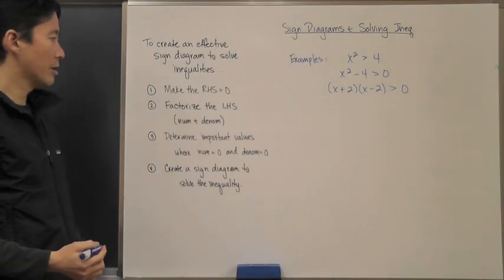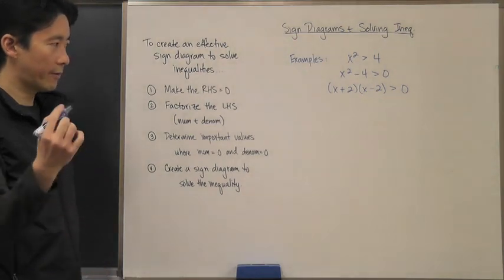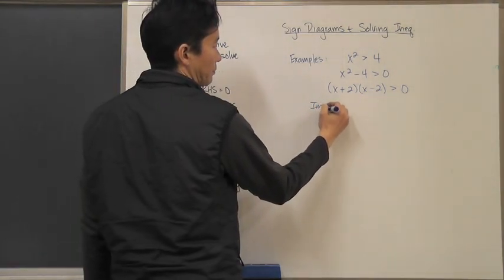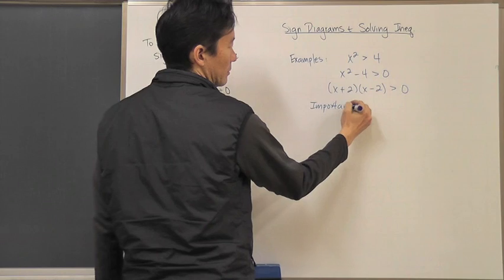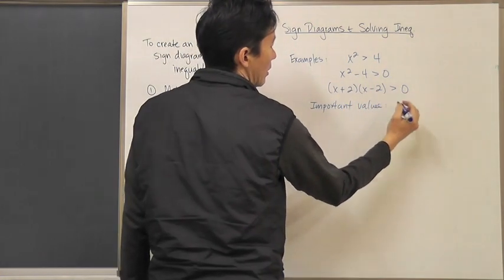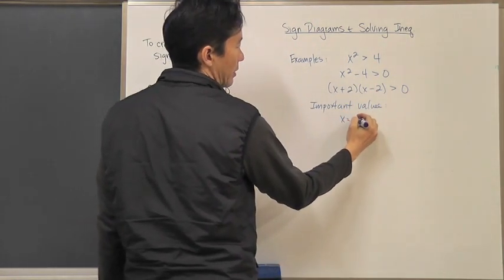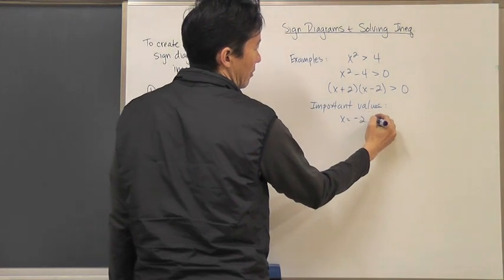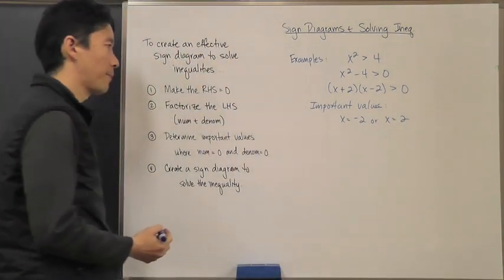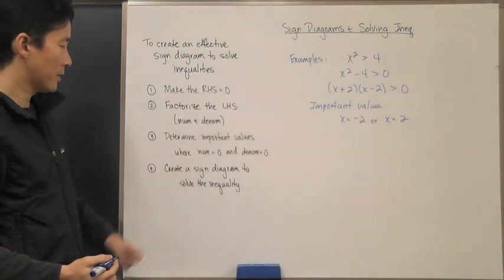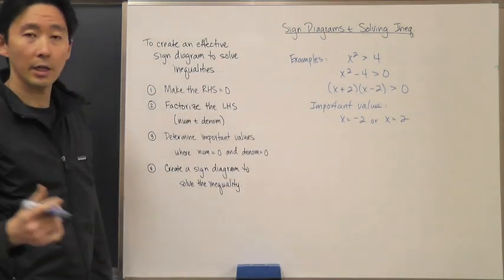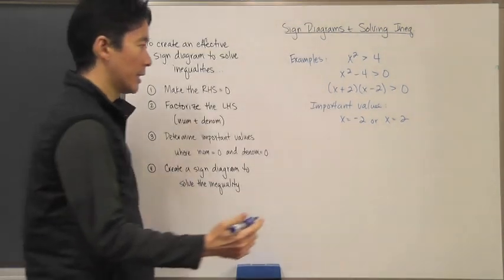Then I'm going to go ahead and determine all the important values. That's when x is going to be equal to negative 2 or x is equal to 2. What that means then is I'm going to create a sign diagram to solve for the inequality.